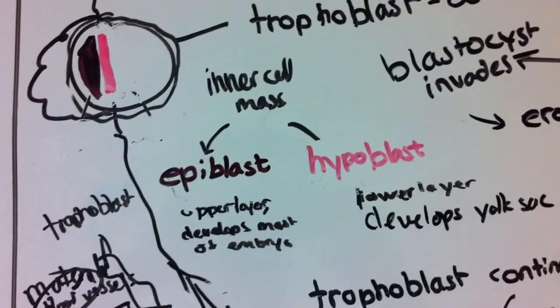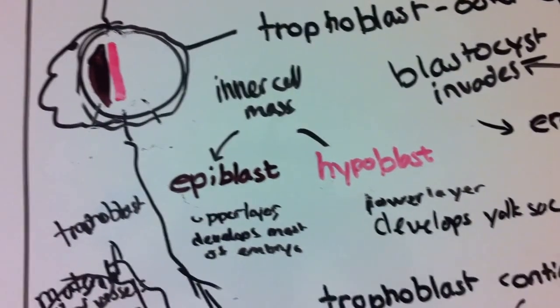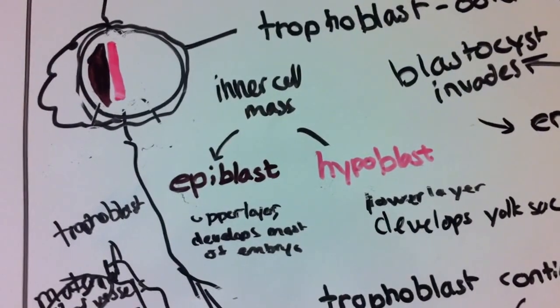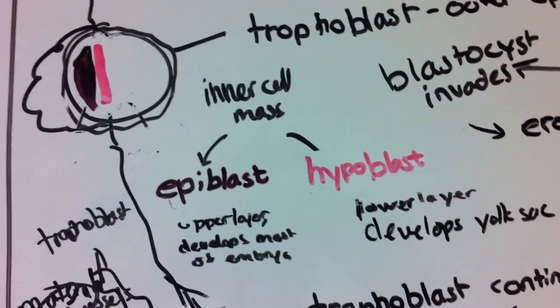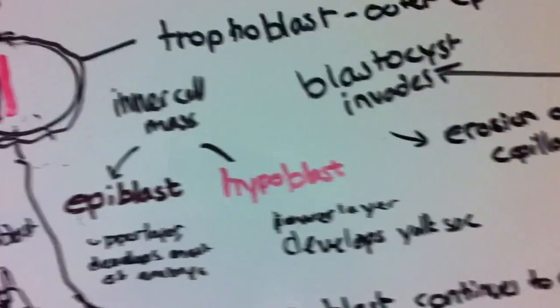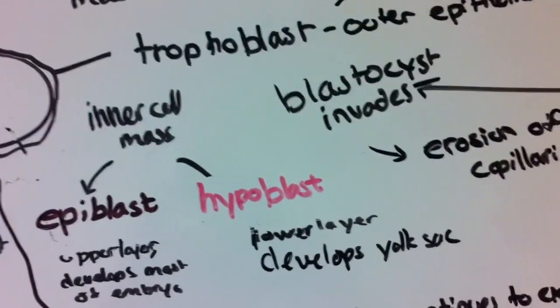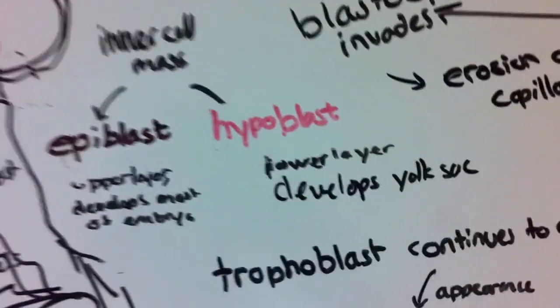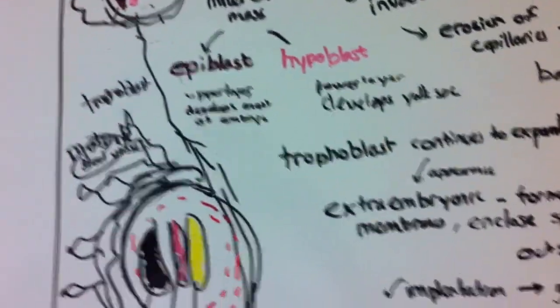The inner cell mass during this process is split up into the epiblast, which is the upper layer and develops most of the embryo. It also divides into the hypoblast, which is the lower layer, and eventually develops into the yolk sac.